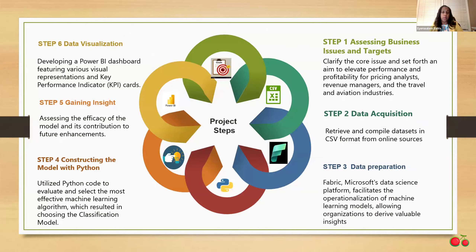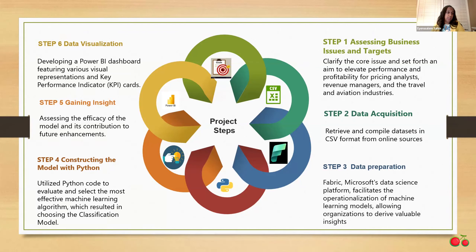These are my steps when I went through my project. First, I assessed the business issue and target by clarifying the issues. Then I retrieved and compiled the dataset in CSV format from online sources. Following that, I used Microsoft Fabric data science platform to facilitate the machine learning models. I then used Python code to evaluate and select the most effective machine learning model — choosing the classification model. I assessed the efficiency of the model and its contribution to feature enhancement. Finally, I developed a Power BI dashboard indicating the key performance indicators.